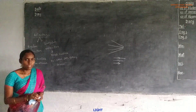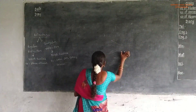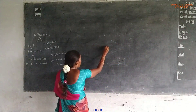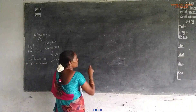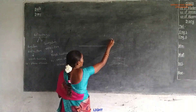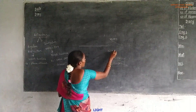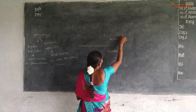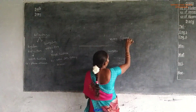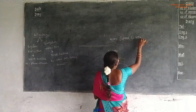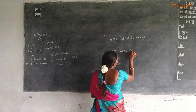Reflection always takes place in one medium, not crossing into another. There is a boundary which separates two media. The first one is rarer and the second one is denser. Rarer means the speed of light is very high. Denser means the speed of light is very less.